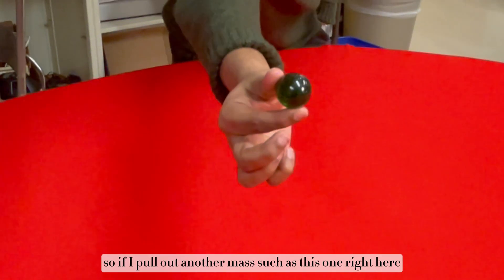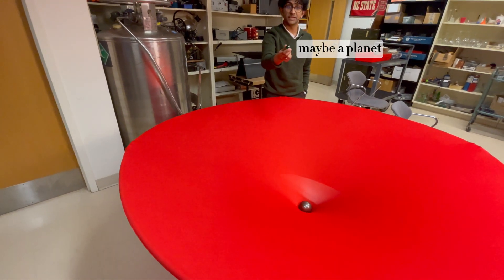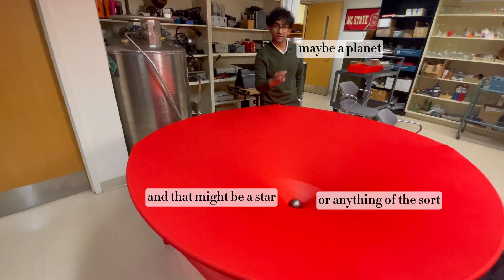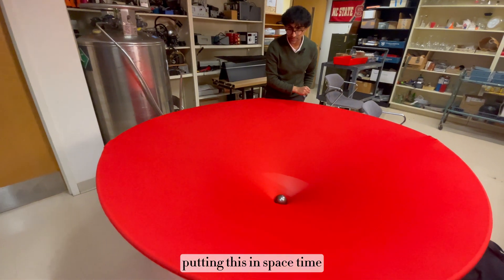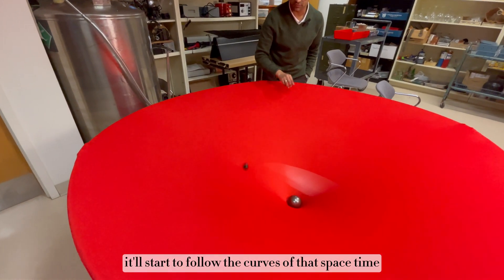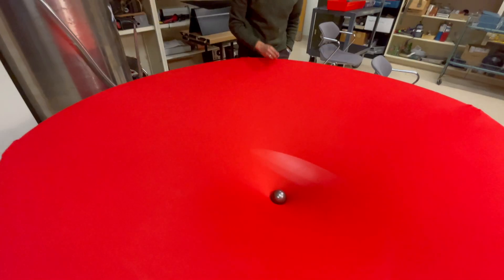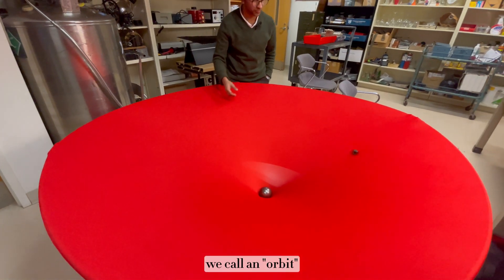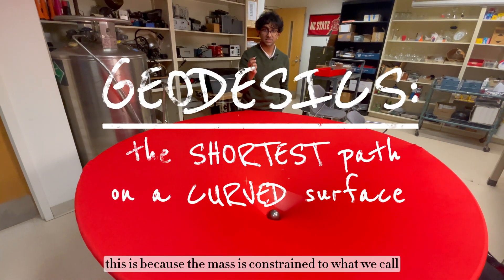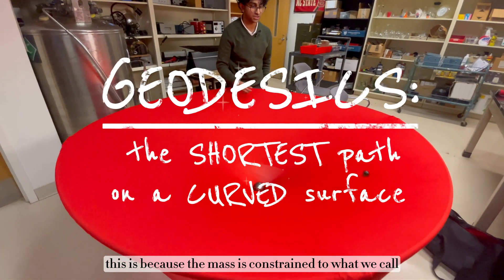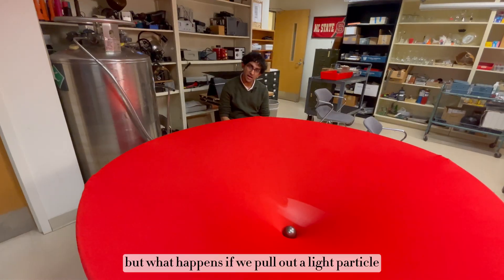So if I pull out another mass, such as this one right here, let's pretend this is any other massive object, maybe a planet, and that might be a star or anything of the sort. Putting this in spacetime, it'll start to follow the curves of that spacetime, essentially going around in what we call an orbit. This is because the mass is constrained to what we call geodesics.